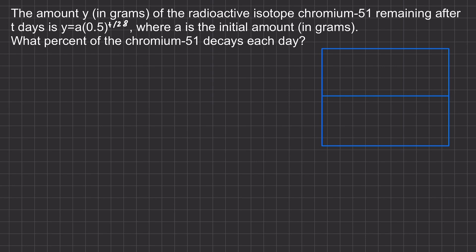The amount y in grams of the radioactive isotope chromium-51 remaining after t days is y equals a times 0.5 in parentheses raised to the power of t over 28, where a is the initial amount in grams. What percent of the chromium-51 decays each day?